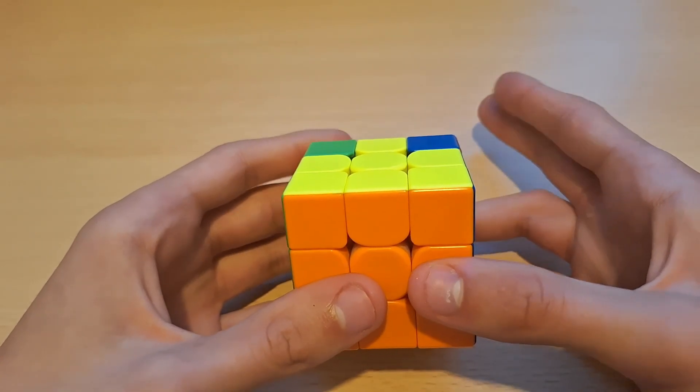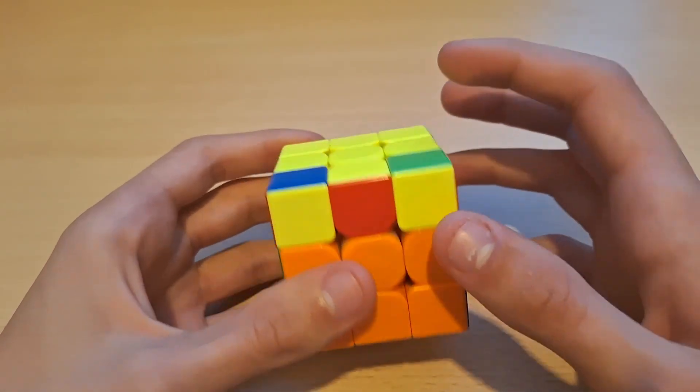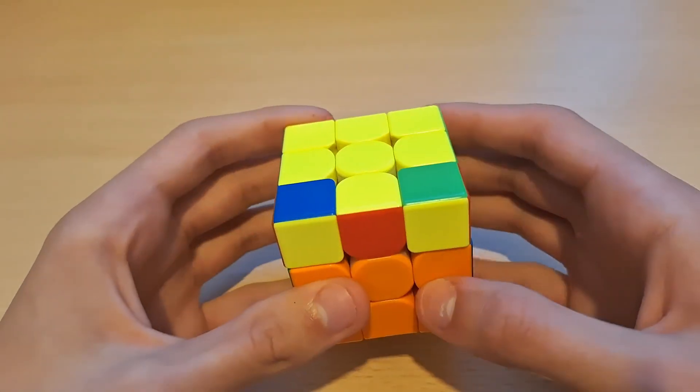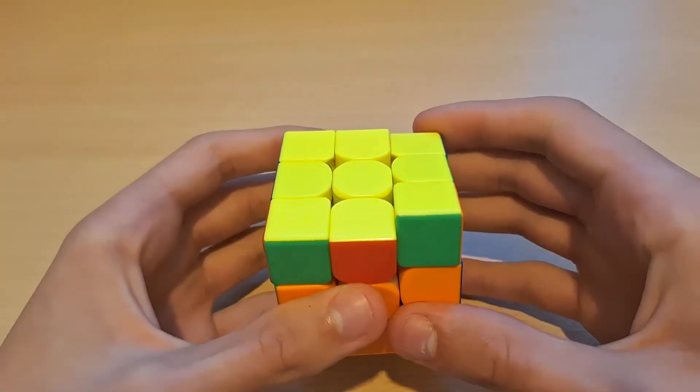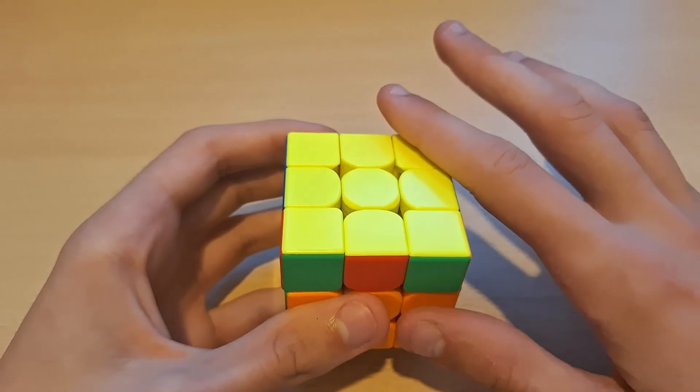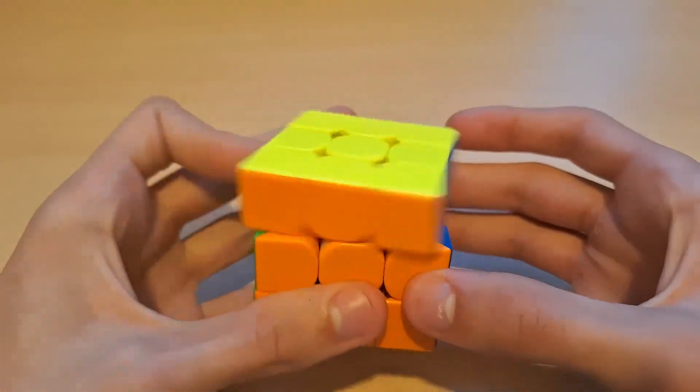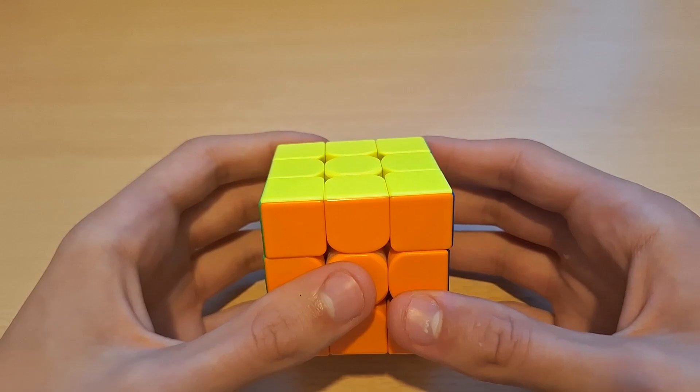So a quick explanation for ZBL. Essentially in CFOP, when you have your F2L done, when you finish F2L, you would normally do one algorithm for OLL to solve the yellow phase and then one more for PLL to solve the entire cube.